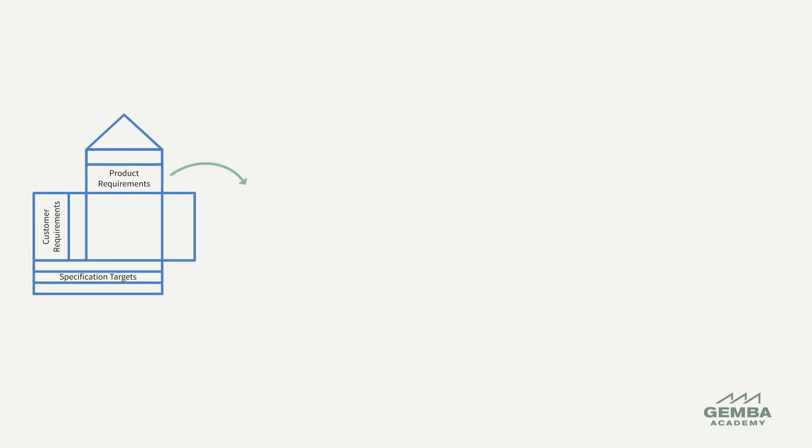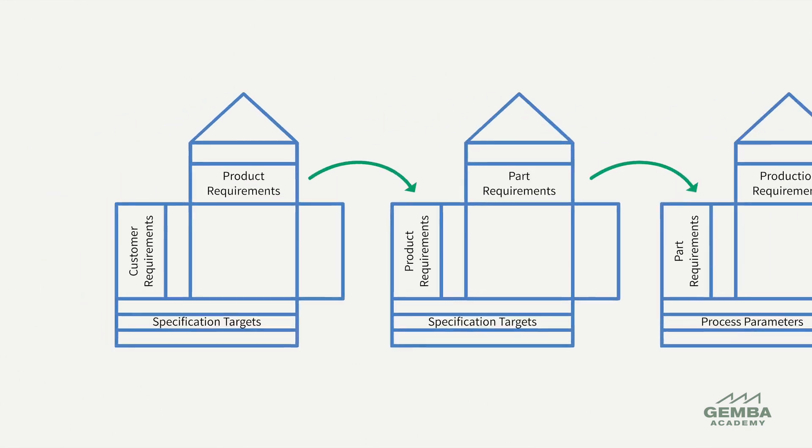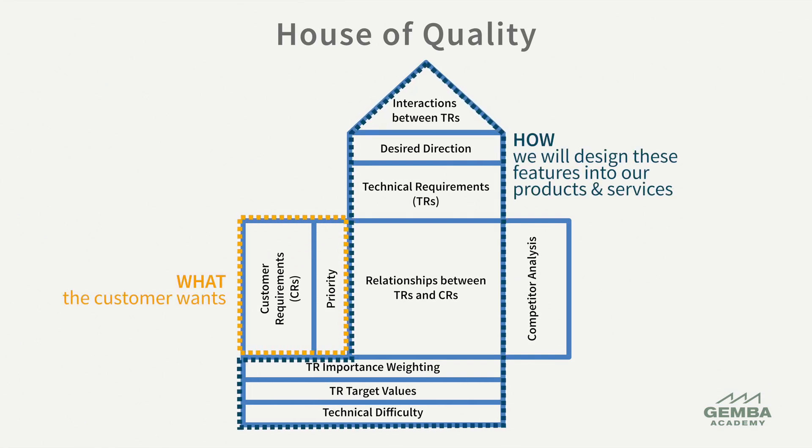QFD follows a step-by-step process. We organize and analyze the information we gather using a matrix called the House of Quality. This provides a visual representation of the relationship between customer requirements and the technical features of a product, helping teams prioritize and focus on what matters most to the customer.